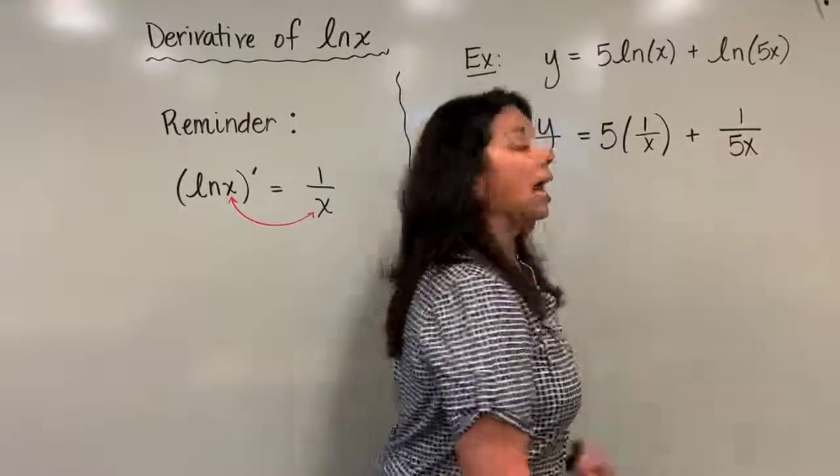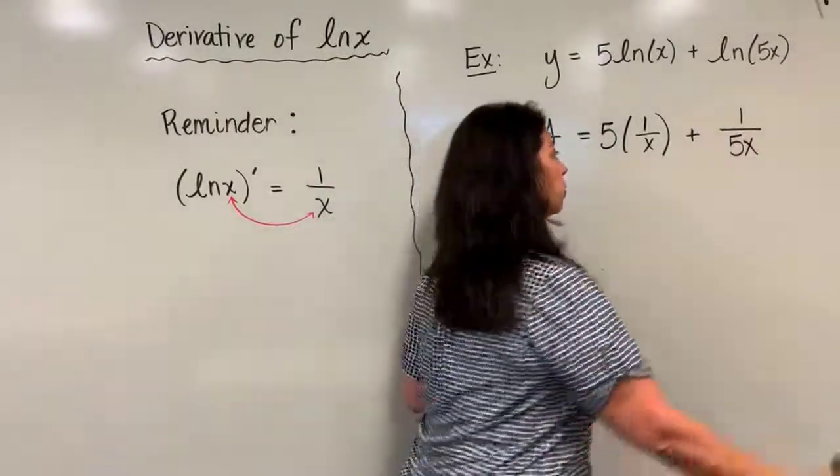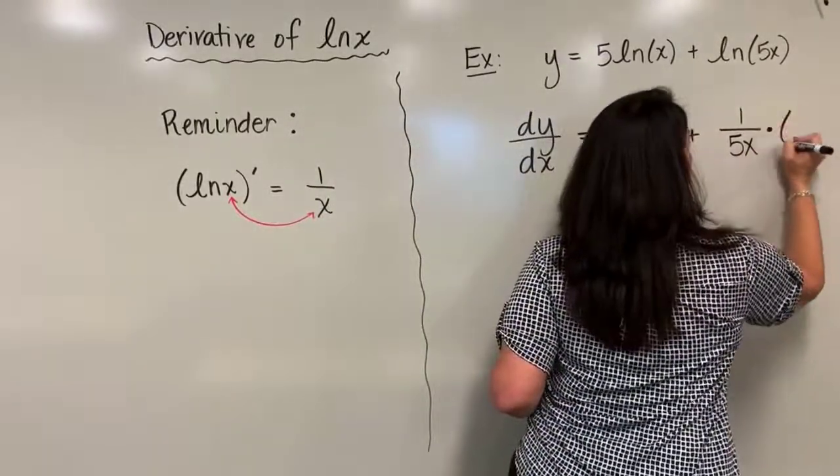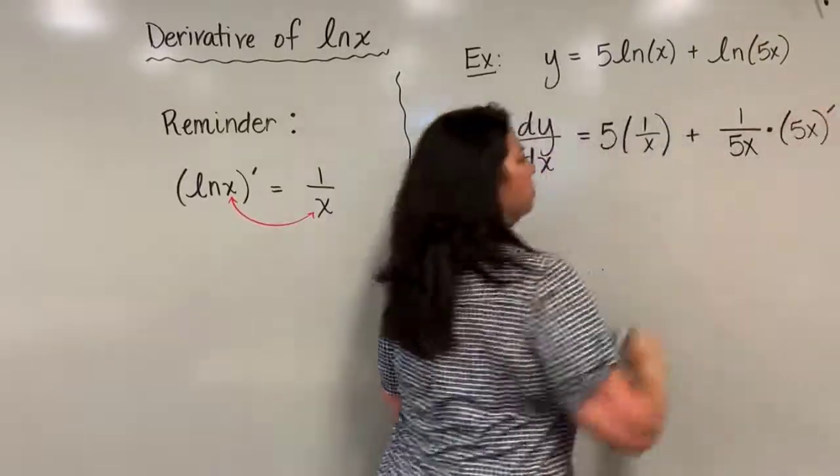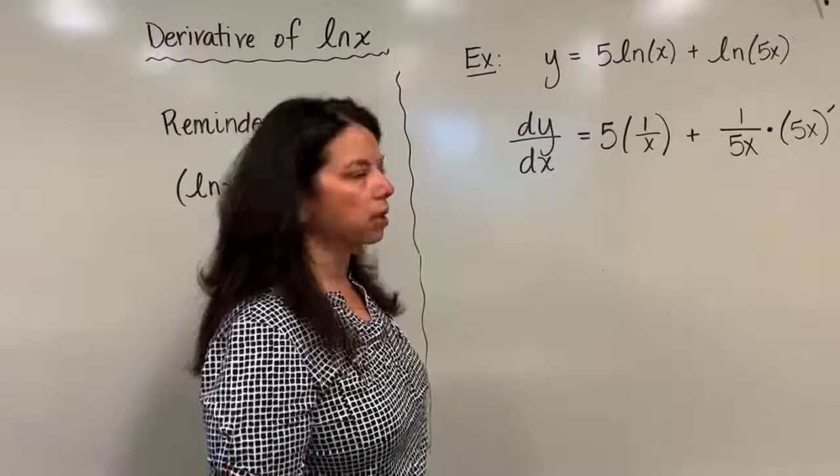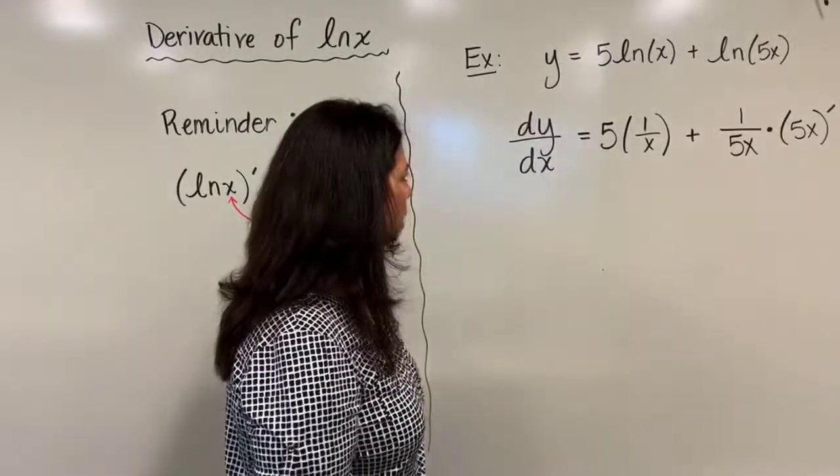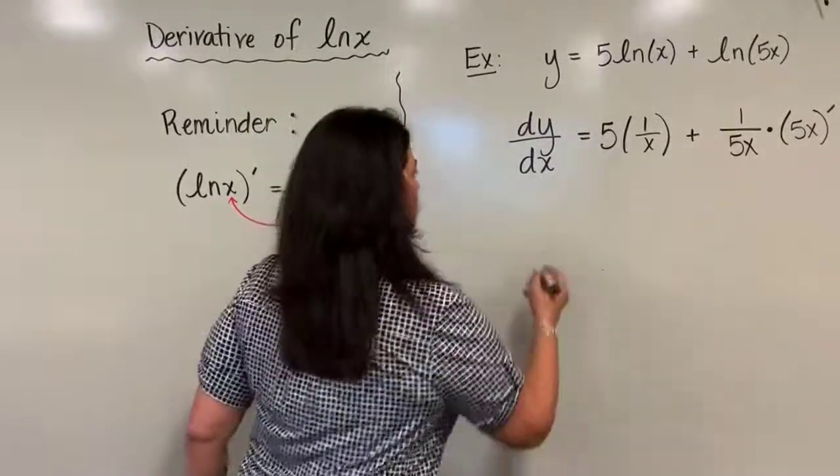So I'll say plus 1 over 5x will go in the denominator, and again, because I have to use the chain rule, I'm going to now multiply that by my 5x's derivative. I'm going to go ahead and just put that there so it's easy to see. I'm not going to do too much in one step.